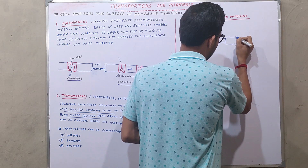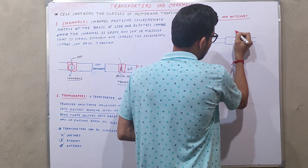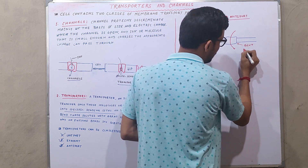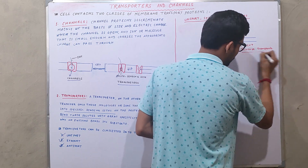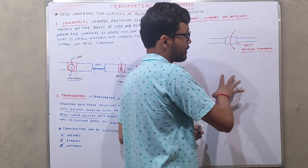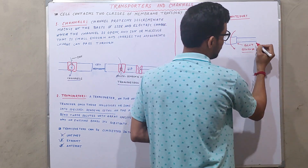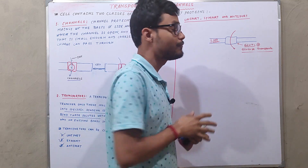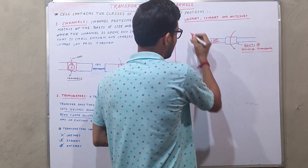If we consider this is a cell membrane and this is the uniport protein, then one kind of molecule passes from one side of the cell to another. A good example is GLUT, that is glucose transporters. GLUT facilitates only the movement of glucose from one side of the cell to another. GLUTs are classified into five categories — GLUT 1 to 5 — and GLUT 1 to 4 are specialized for transporting glucose or fructose molecules from one side of the cell to another.